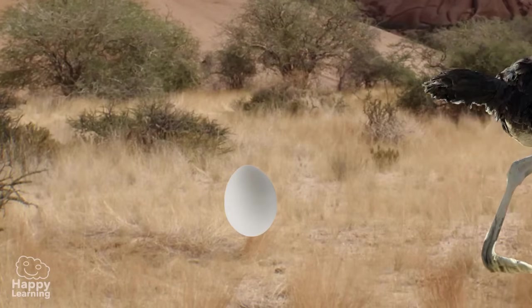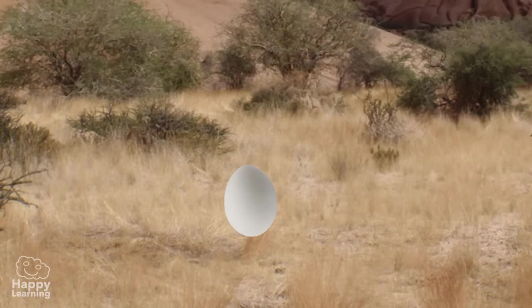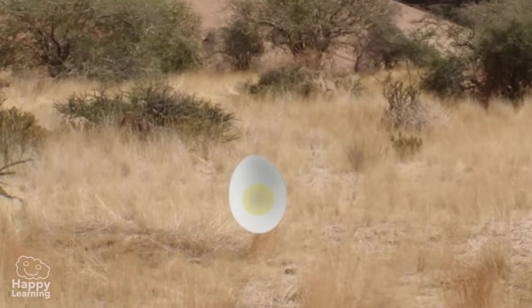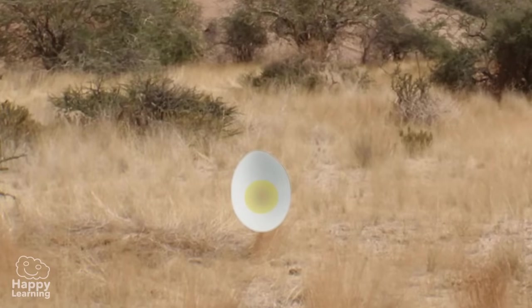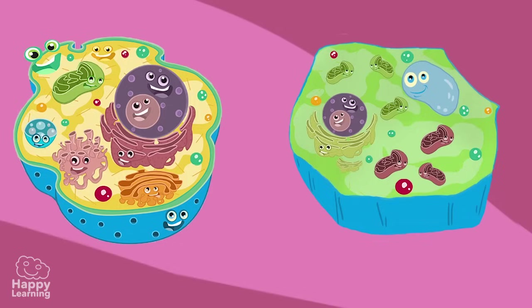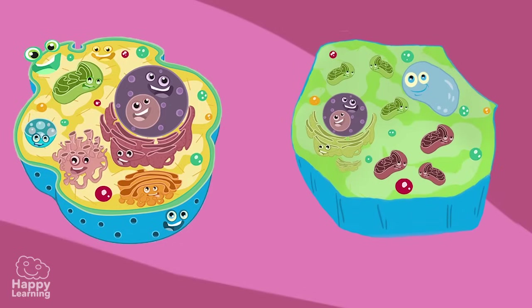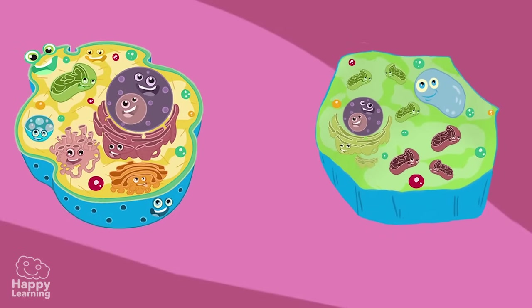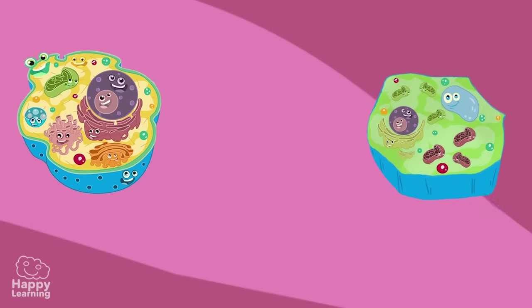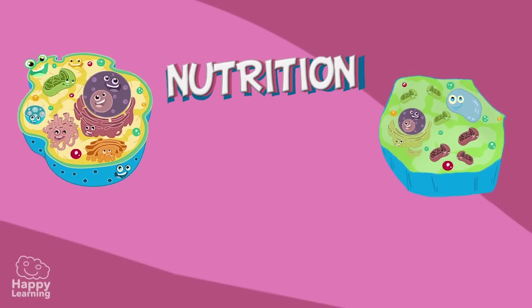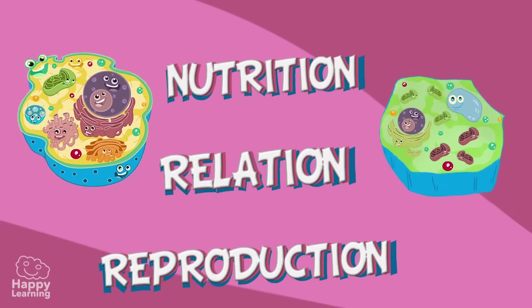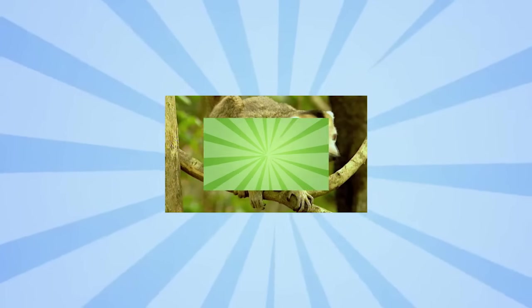Though some, such as this egg, can be easily seen. By the way, do you know that an ostrich egg is the biggest cell that exists? The cells of both animals and plants have three vital functions: nutrition, relation, and reproduction.